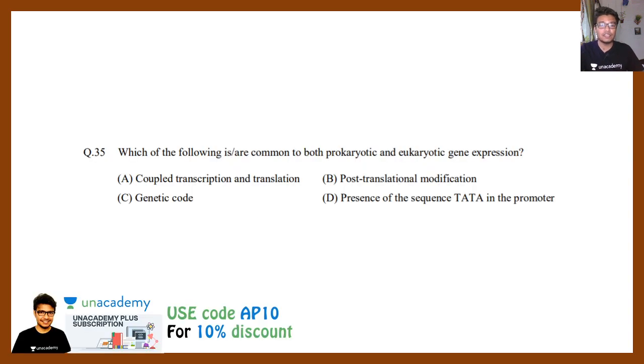Let's come back to the video and try to understand the questions that were asked previously. Coming to 2021, this question says which of the following is or are common to both prokaryotic and eukaryotic gene expression? Before we start the video, let me tell you there would be at least one question from gene expression regulation. Most likely that question is going to be from lac operon or trp operon. But this particular question here is talking about overall eukaryotic and prokaryotic gene expression regulation. The options are: coupled transcription and translation, post-translational modification, genetic code, and presence of TATA sequence in the promoter.